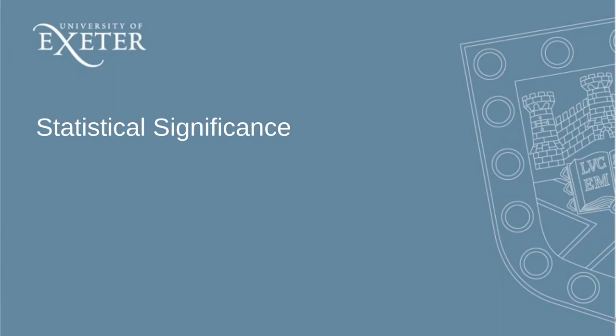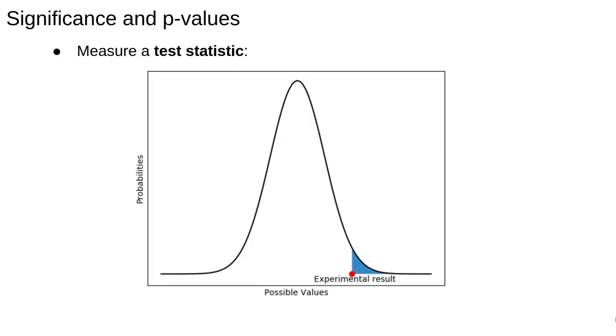In this video we'll talk about statistical significance and p-values. Hypothesis testing usually requires us to construct a test statistic, which could be something simple, like the proportion of data satisfying a certain condition, or something slightly more complicated, like a t-score or a z-score, which we'll talk more about later.